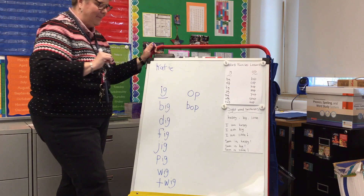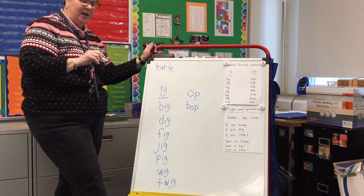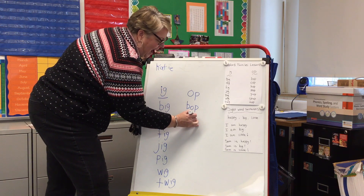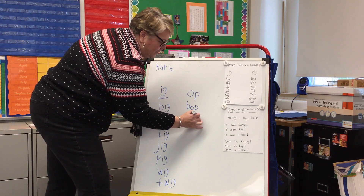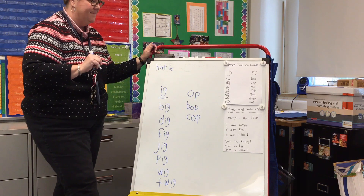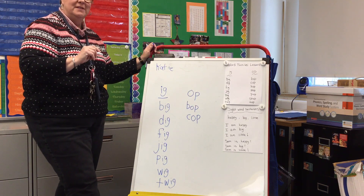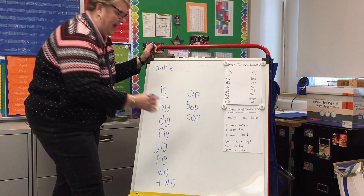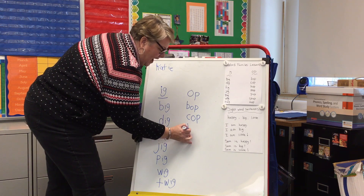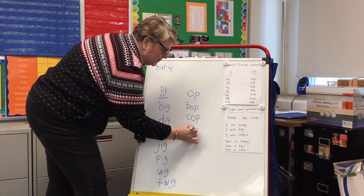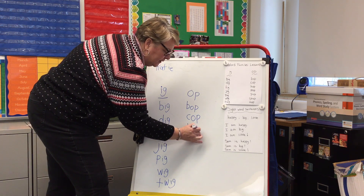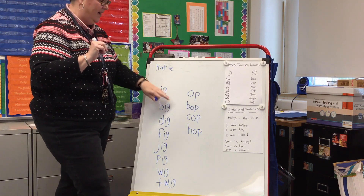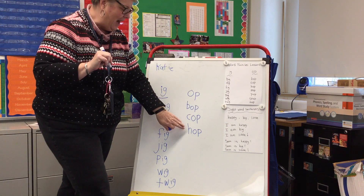The word is 'bop.' Next word 'cop' — C like cat, O like octopus, and P like pig. Next word is 'hop,' like a bunny will hop — H like hat, O like octopus, P like pig. So we have bop, cop, hop.